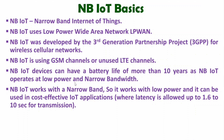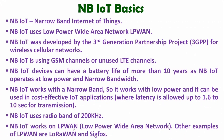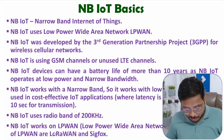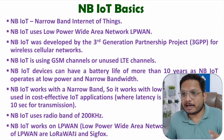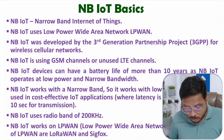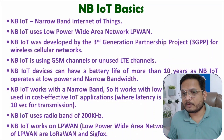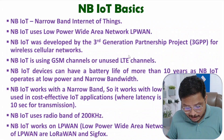NB-IoT uses a radio band of 200 kilohertz and operates with LPWAN — low power wide area network. Other LPWAN examples include LoRaWAN and Sigfox. LoRaWAN — long range wide area network — is not operated with cellular channels, unlike NB-IoT which operates with GSM or unused LTE channels.